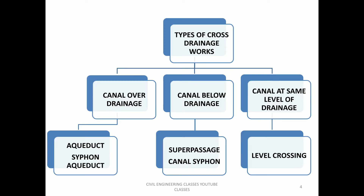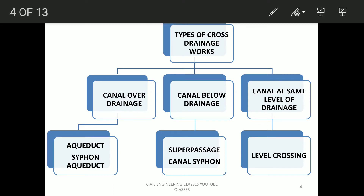There are different types of cross drainage structures based on the position of the canal and the stream. The first position is the canal over the drainage — this is the aqueduct. The other type is the siphon aqueduct. The next one is the canal below the drainage: super passage and canal siphon. The last condition is when the drainage is at the same level — this is the level crossing.